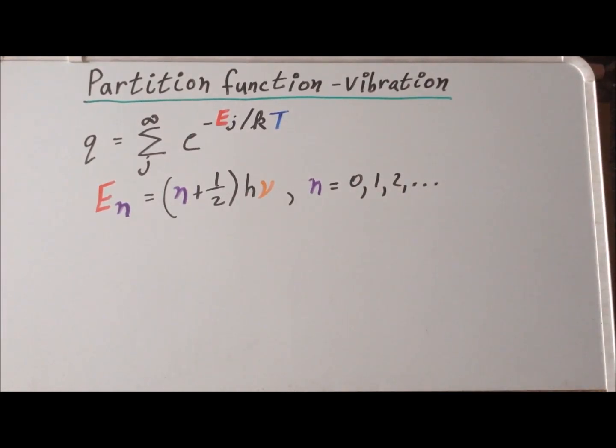The harmonic oscillator is non-degenerate, so each level has a distinct energy and the lowest possible value of energy occurs when n is equal to zero, that is the ground state.